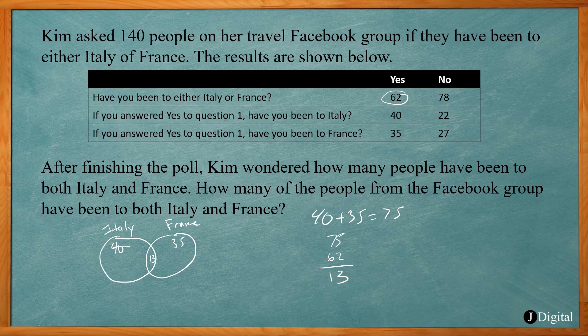So if I subtract 13 from 40, that gives me 27. If I take 13 away from 35, that gives me 22. Now if I add those together, 27 plus 13 plus 22, that adds up to 62. So our answer in this case will be 13.